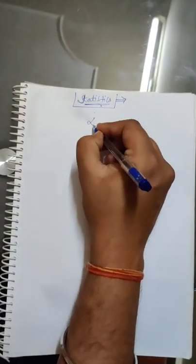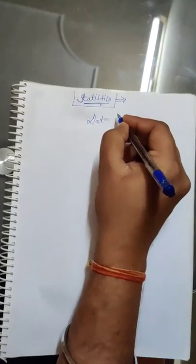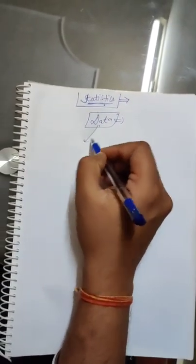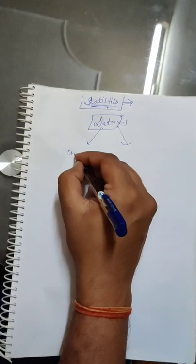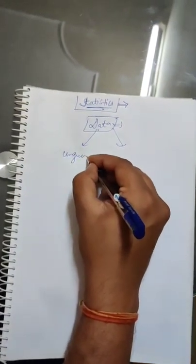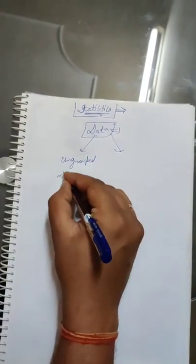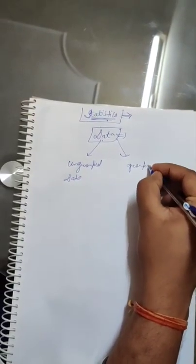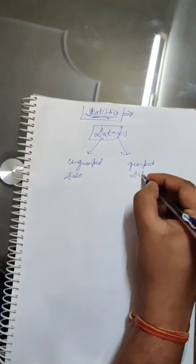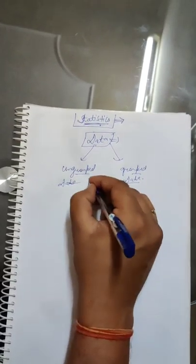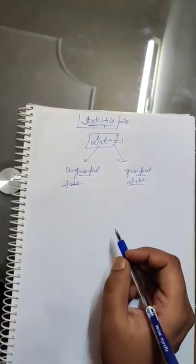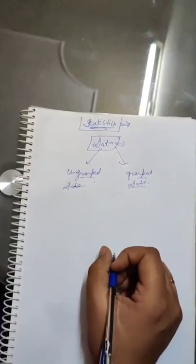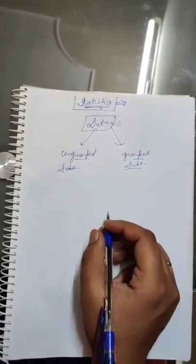What do you mean by the term data here? Data means collection of information — any information that can be collected and stored in the form of data. Data is of two types: that is ungrouped data and grouped data. We have to find certain results in the form of ungrouped data or grouped data.